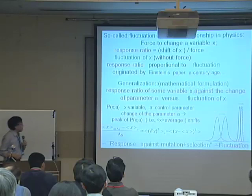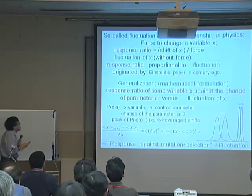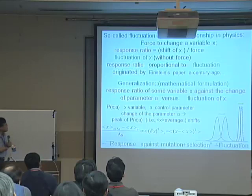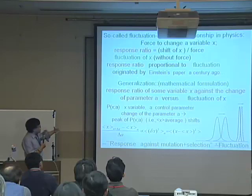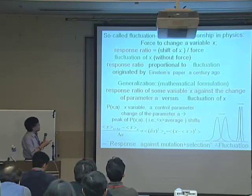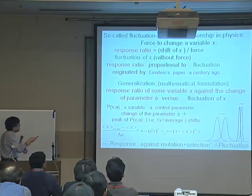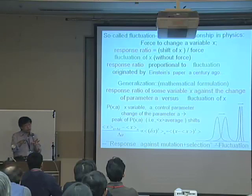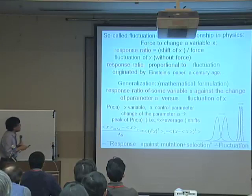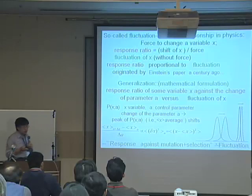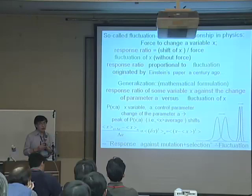I come from statistical physics, and this reminds me of the fluctuation-response relationship in physics. In thermal equilibrium, there is a response ratio: put some force to the system, and there is a response — for example, a change of current. This change of X divided by force. But even without putting this force, there is already some fluctuation, and we can measure this variance of fluctuation. What they say is that this variance and response ratio are proportional. This started from Einstein's paper. Of course, this is true only in thermal equilibrium or near thermal equilibrium.